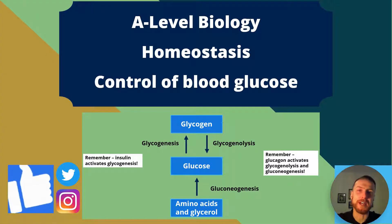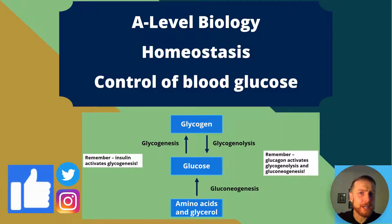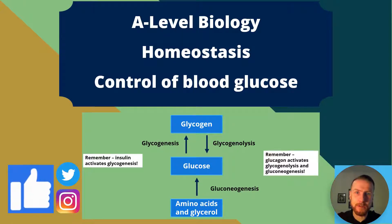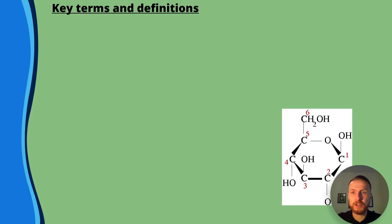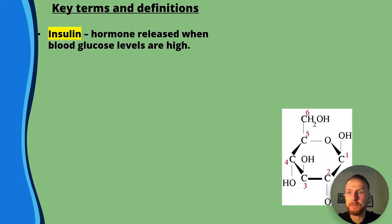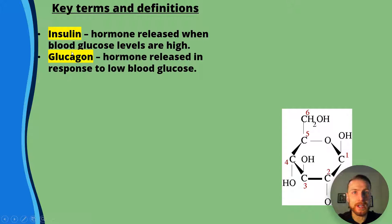I'm excited to do today's video because I'm going to take a fairly tricky process and make it really simple for you. Stay with me because I'm going to cover everything you need to know for AQA A-level biology. We'll kick off with some key terms. Insulin is a hormone released when blood glucose levels are high. Glucagon is a hormone released in response to low blood glucose.